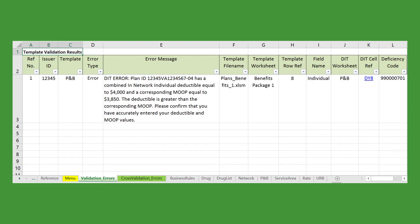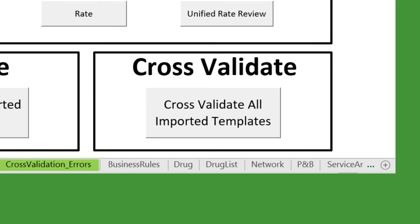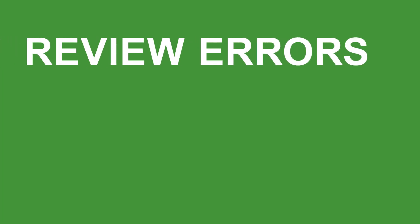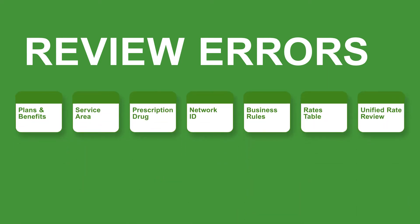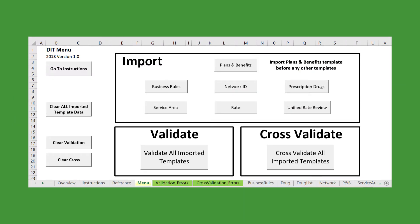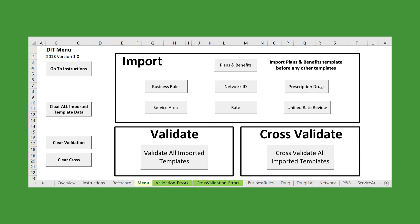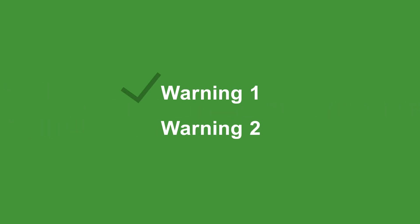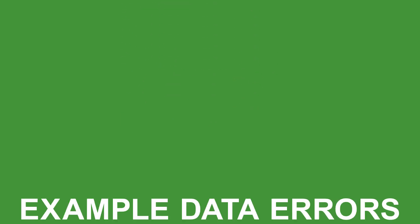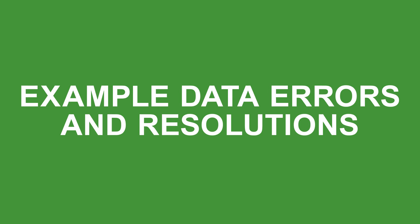Once you've completed the Validation Review, return to the Menu tab and click on the Cross Validate All Imported Templates button. If there are any errors or warnings found in the Cross Validation Review, you will see these on the Cross Validation Errors tab. Review the errors and determine the changes that need to be made and the templates in which they need to be made. Repeat the same update and reimport process discussed earlier. Once the updated templates are reimported, be sure to clear both the Validation and Cross Validation results and run both reviews again. Continue following these steps until you receive a message that says no warnings or errors were found for both reviews, or you've reviewed and determined that the remaining warnings are not applicable and will not result in an error in the application.